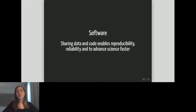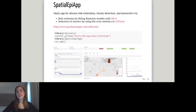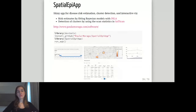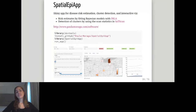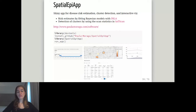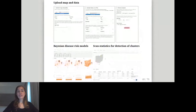I also develop software so that my methods can be widely available and provide benefits beyond my own applications. I am the author of SpatialEpi, a Shiny web application for disease mapping, detection of clusters, and interactive visualization. Users can upload disease case data, population at risk, covariates, and a map with regional boundaries. By clicking buttons, they can obtain disease risk estimates by fitting Bayesian models using INLA, detect clusters using scan statistics in SaTScan, visualize results through interactive maps, time trend plots, and interactive tables, and generate reports of the analysis conducted.